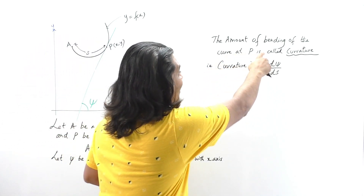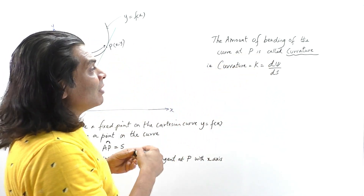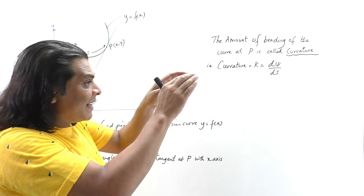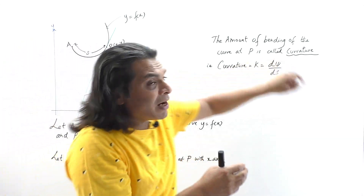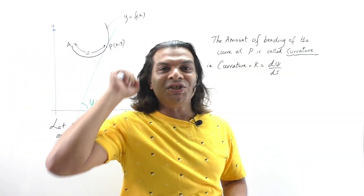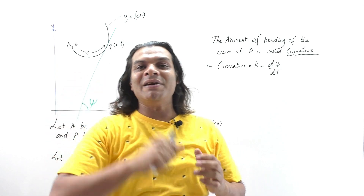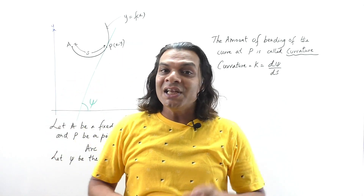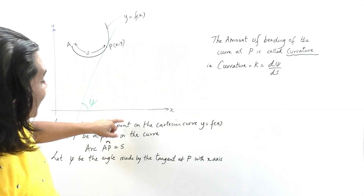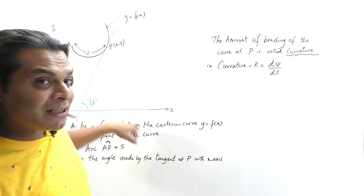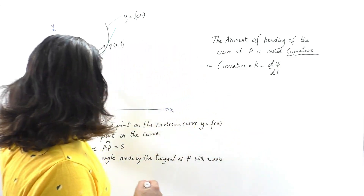The amount of bending of the curve at P is called curvature. That is, the amount of bending at point P is called curvature. Curvature is defined as k = dψ/ds, that is, the change in the angle made by the tangent at P with the x-axis, with respect to the arc length.